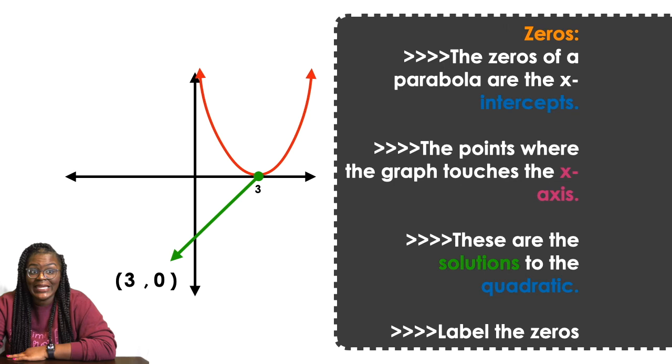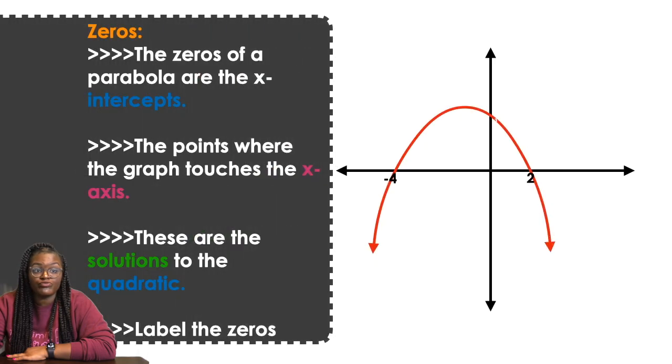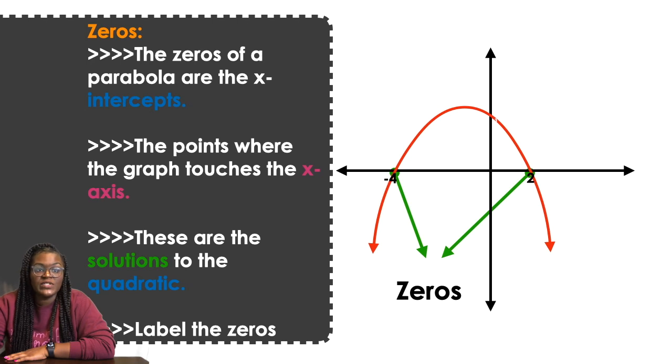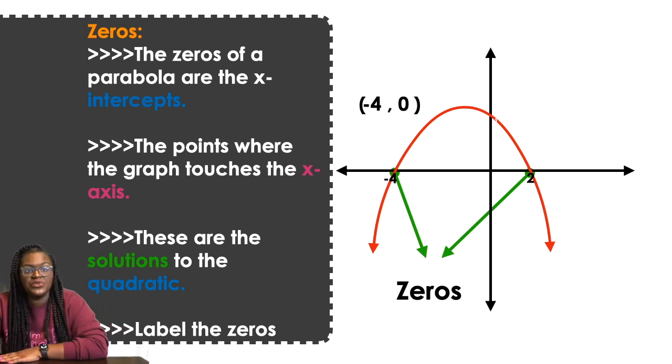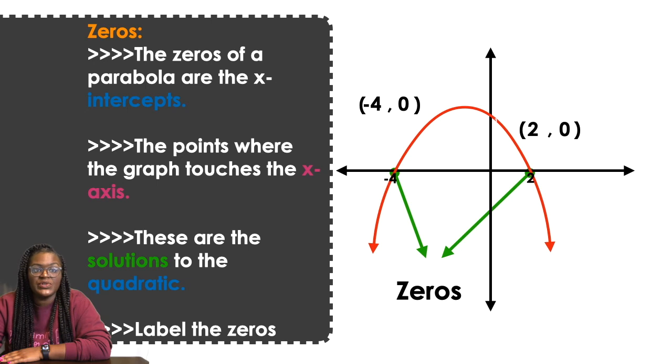In this case, it touches it one time at 3, so 3 comma 0. So my zero, which I'm going to label—you should be labeling—is 3 comma 0. It is an x-intercept, it is a solution. So in this case, I have two zeros or two x-intercepts or two solutions, because remember all of those mean the same thing.